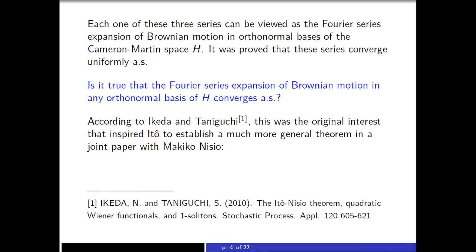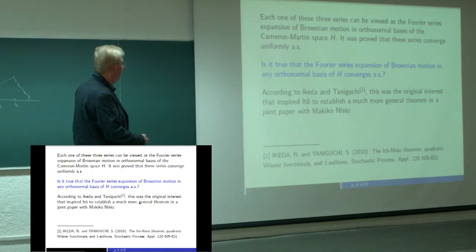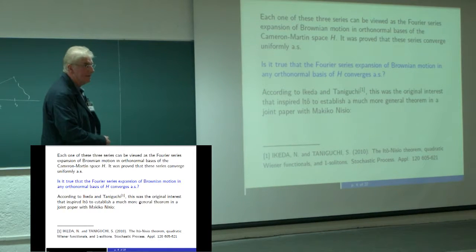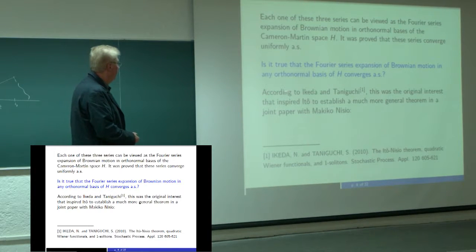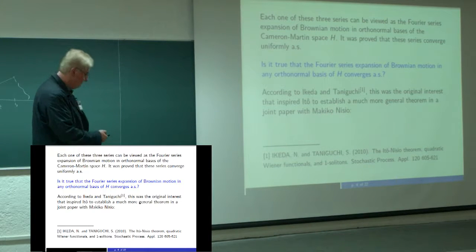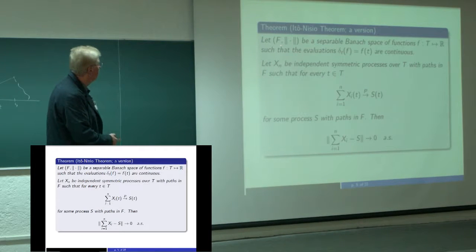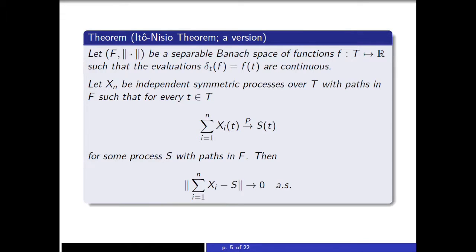Now comes Itô. Each of those three series can be viewed as Fourier series expansion of Brownian motion in an orthonormal basis of the Cameron-Martin space H. It was proven that these three series converge uniformly. So the question was, is it true that if we take any Fourier series expansion of Brownian motion in an orthonormal basis of H, does such a Fourier series converge almost surely? This is equivalent to asking if another thing: is it enough to prove convergence of one series to get the convergence of all?